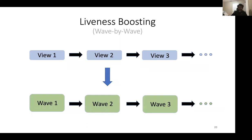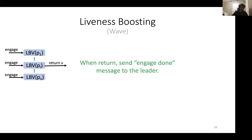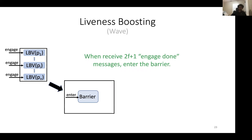Now we are ready for the framework algorithm. Instead of operating in a view-by-view manner, we operate wave by wave. In each wave, instead of running a single LBV, we run N concurrent LBVs, each with a different leader. Every party invokes engage in every LBV. Whenever an engage invocation returns, the party sends an engage-done message to the leader of that LBV. Whenever the leader collects 2F+1 engage-done messages, it enters the barrier.